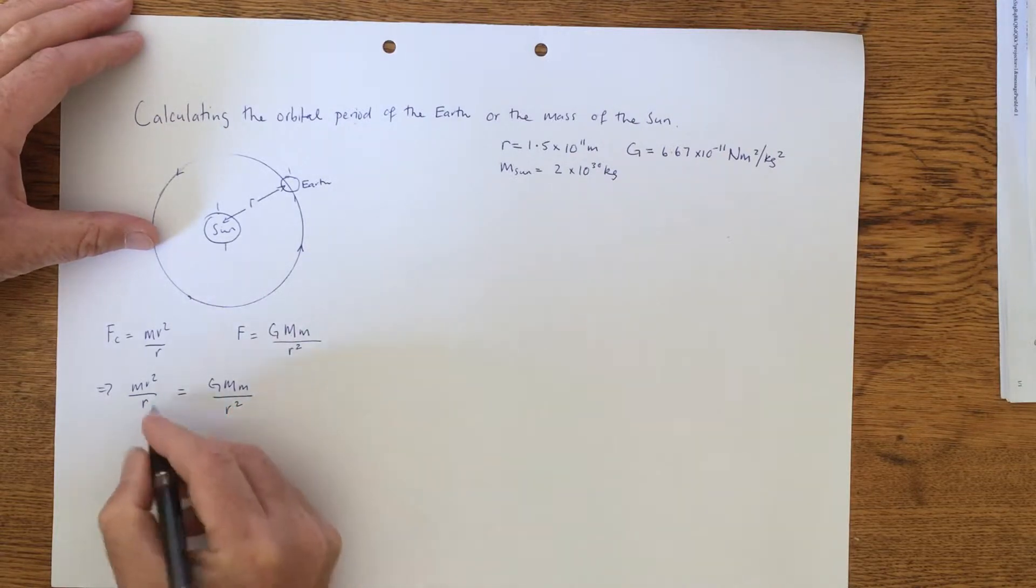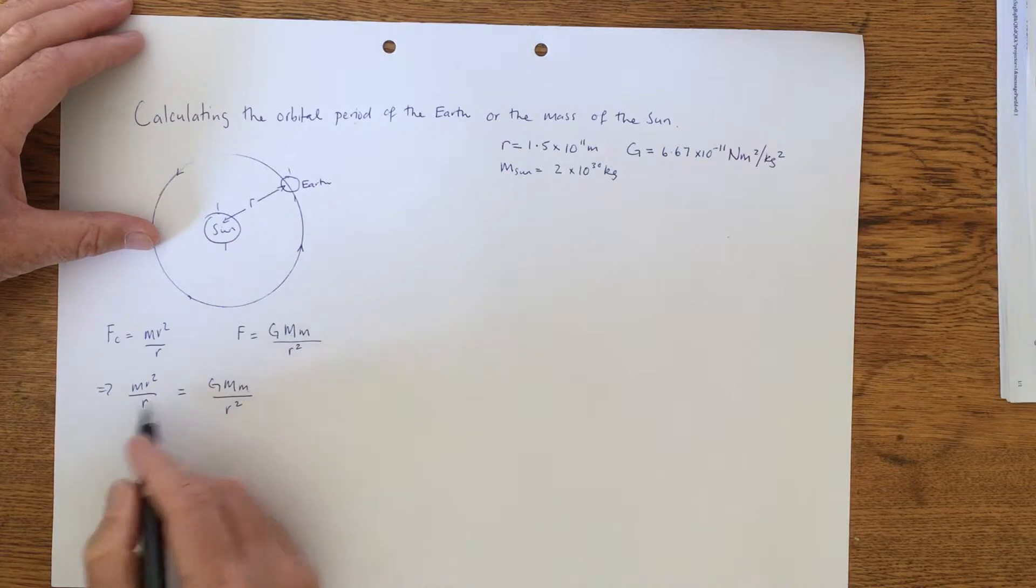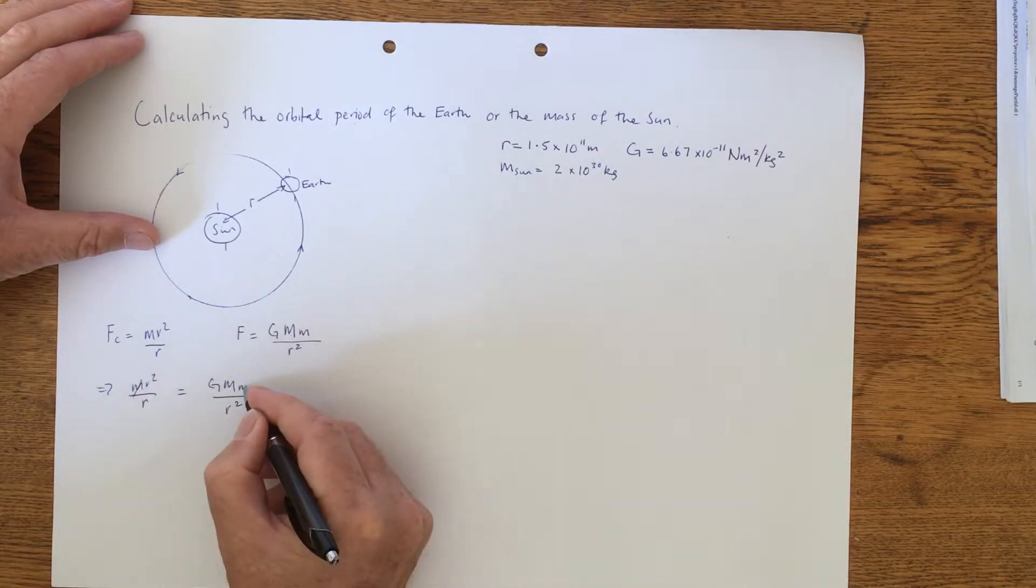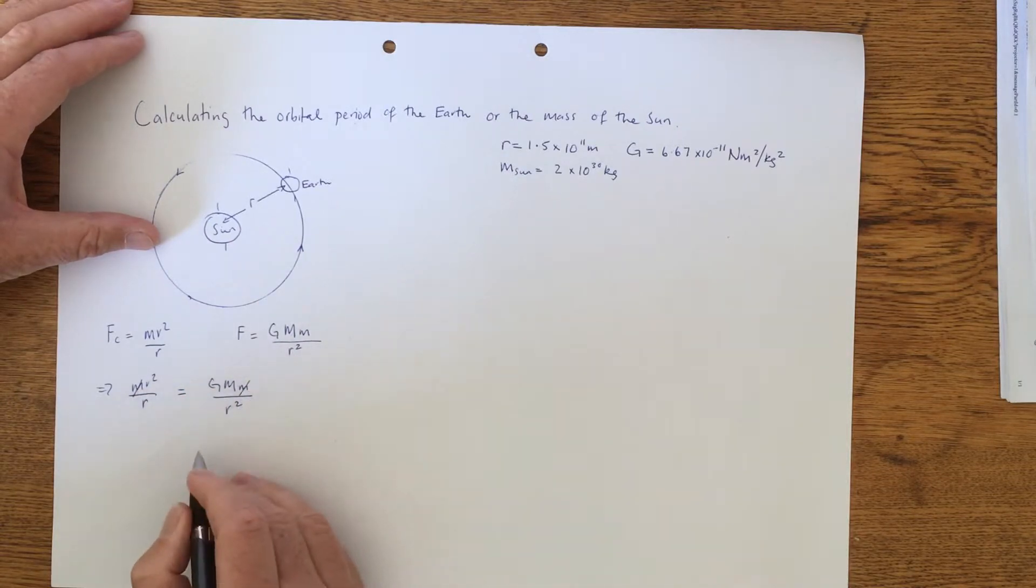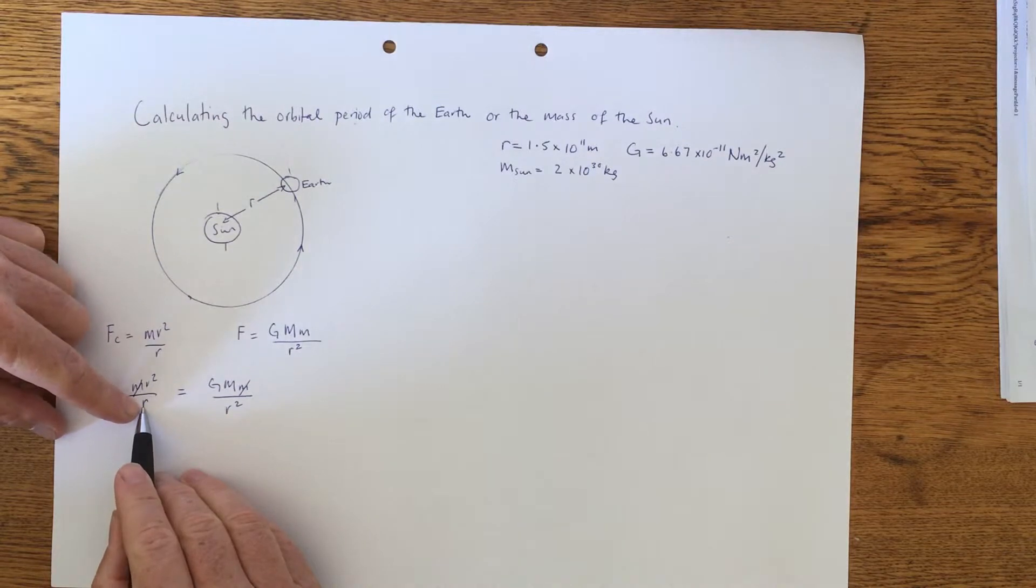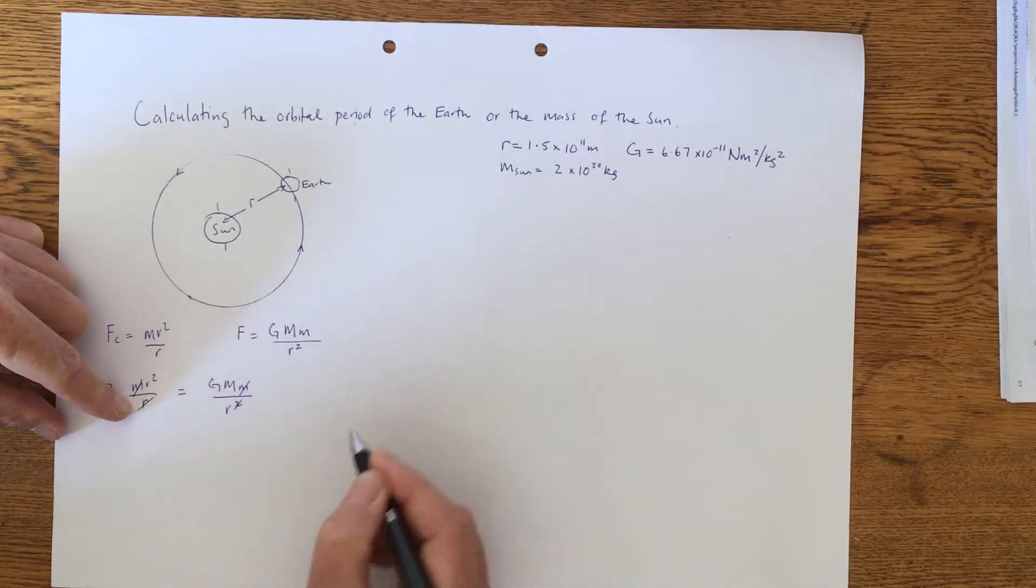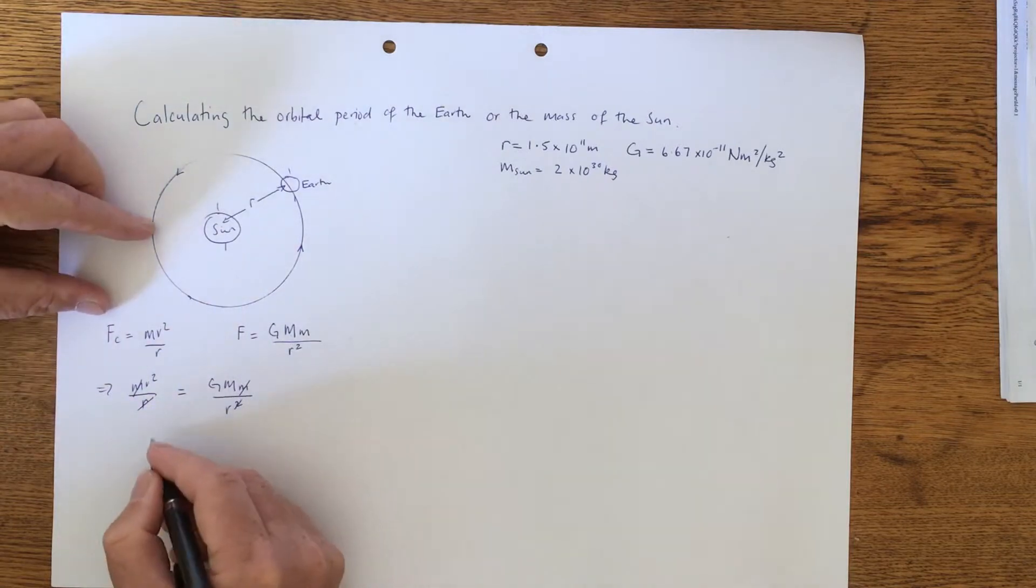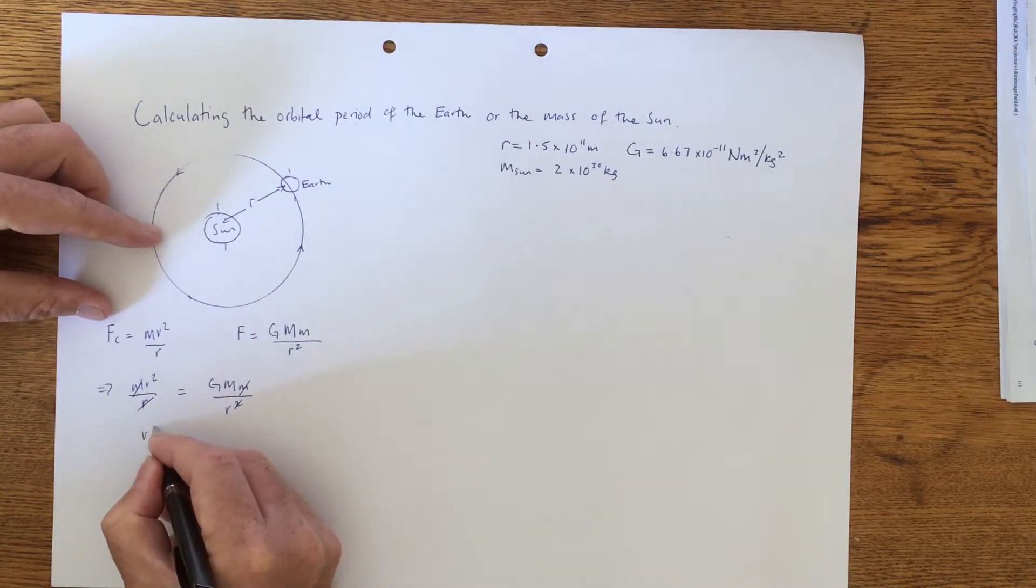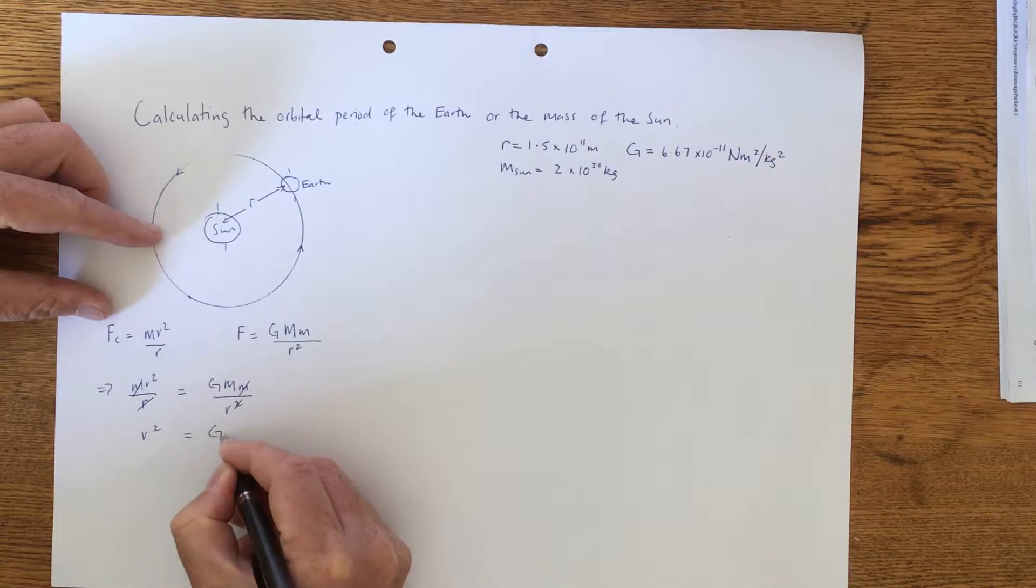And we'll simplify that down. As you can see, the little m is on this side and the little m on that side, so they can be cancelled out. There's also the radius on this side and the radius there, so we'll just make that there and cancel that off. And we're left with v squared equals GM over R.